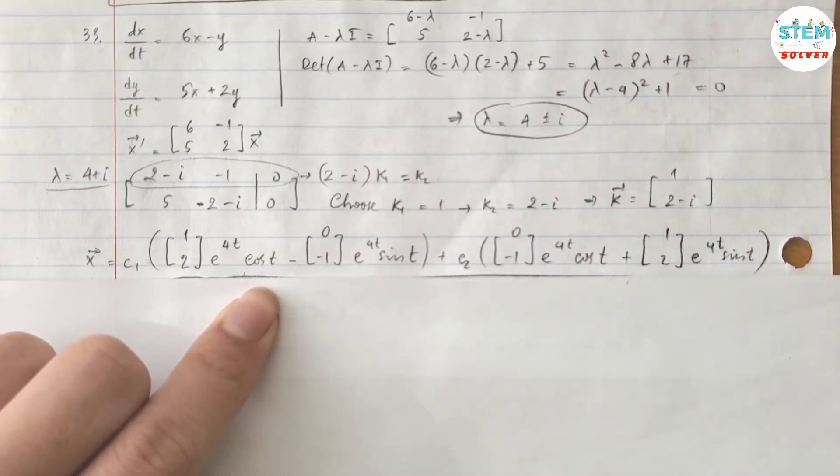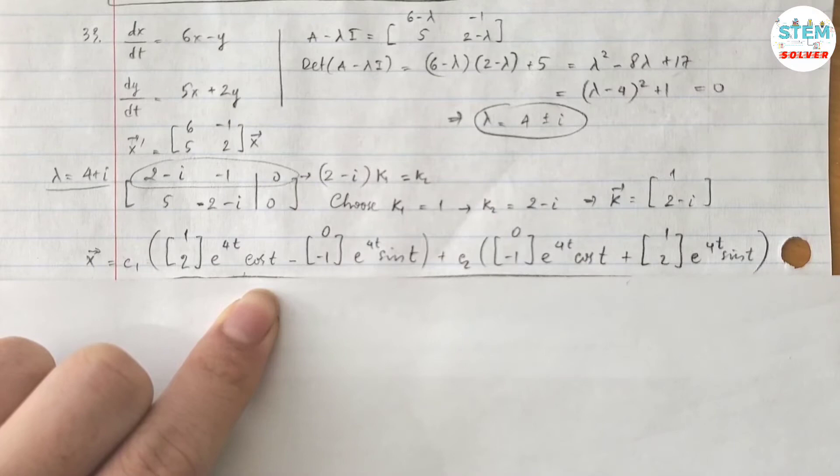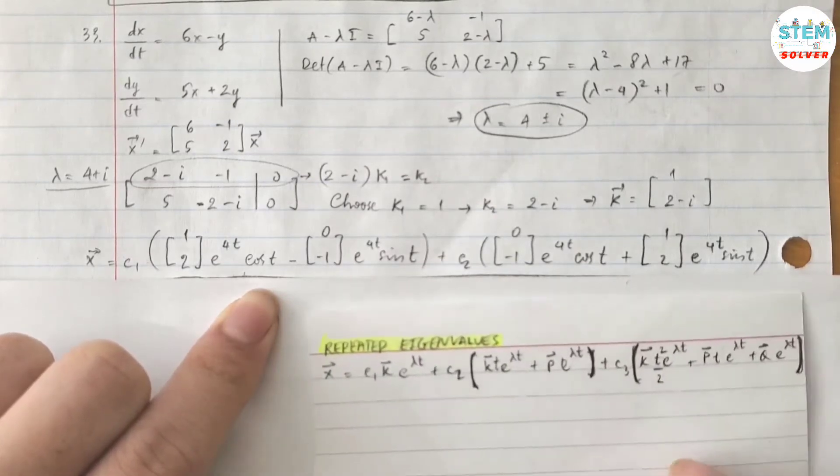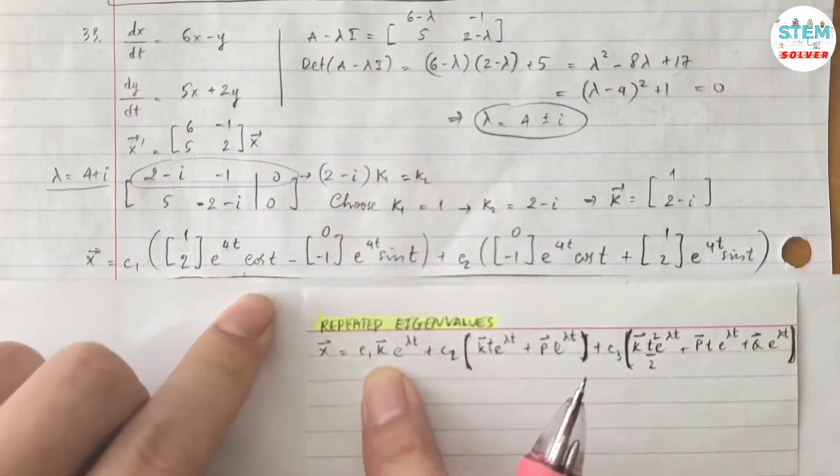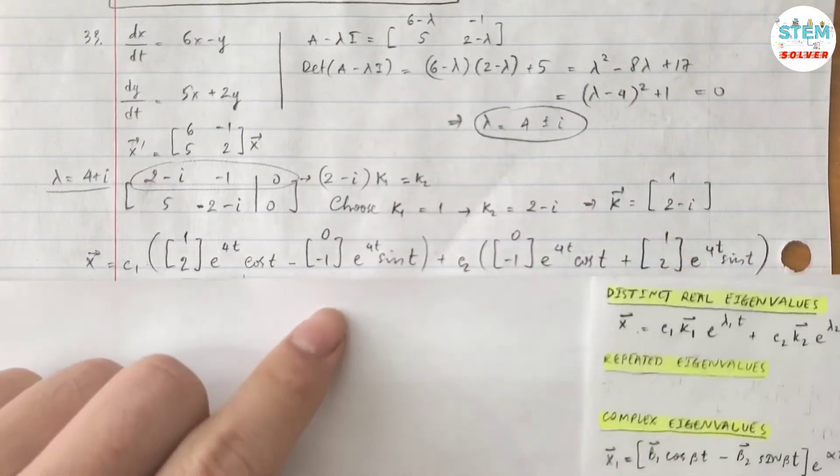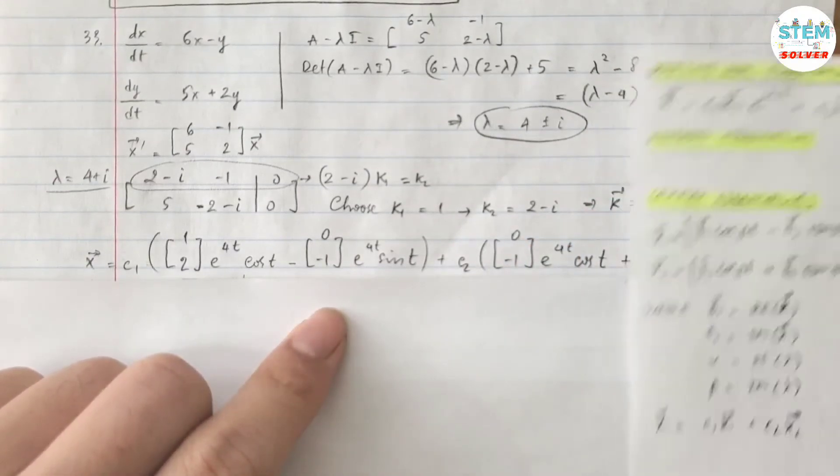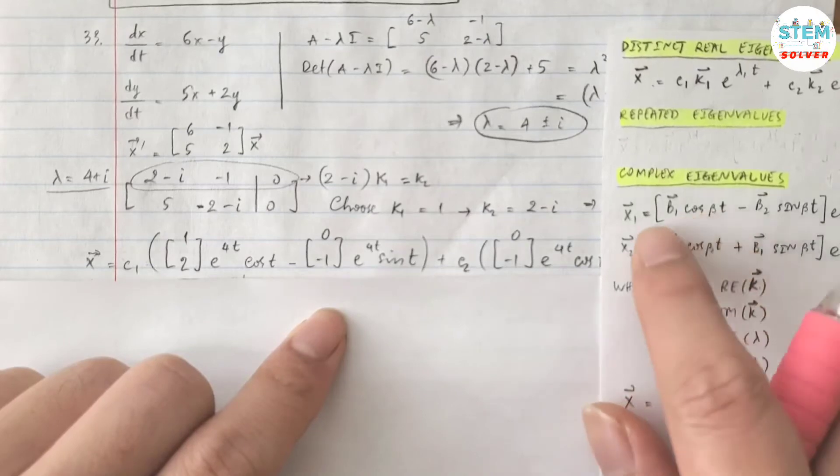So the answer is going to be written in this form. Because you have a complex eigenvalue, your final answer is going to be this.